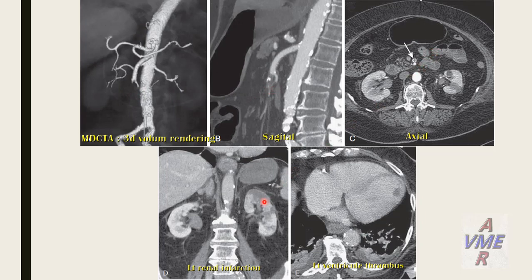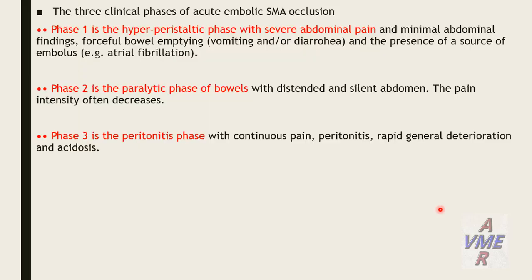There are three clinical phases of acute embolic superior mesenteric artery occlusion. Phase 1 is the hyperperistaltic phase with severe abdominal pain, minimal abdominal signs, forceful bowel emptying, vomiting, and the presence of a source of embolus such as atrial fibrillation. Phase 2 is the paralytic phase with a distended and silent abdomen; pain intensity often decreases. Phase 3 is the peritonitis phase with continuous pain, peritonitis, rapid general deterioration, and acidosis.